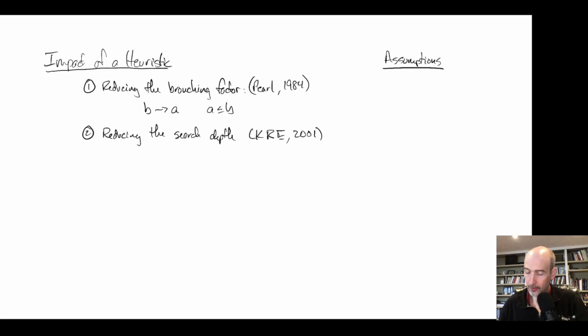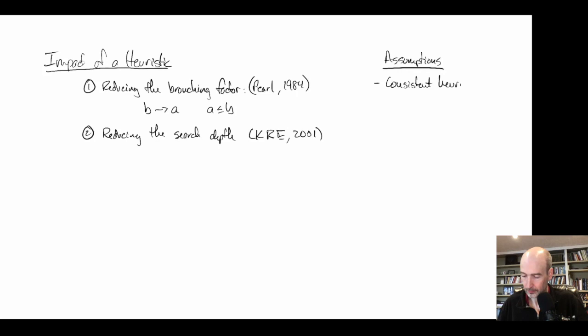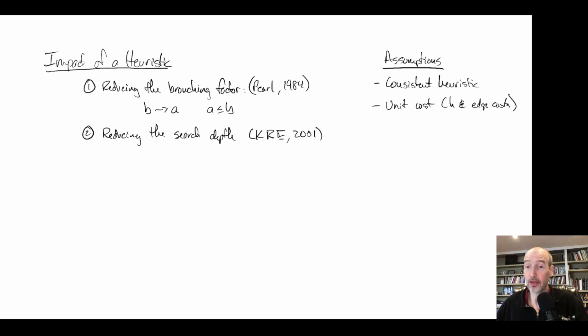This paper had a straightforward analysis of what could happen when we add a heuristic to the problem, or if we look at changing the strength of a heuristic. There are later papers that made more complicated assumptions, but we're going to look at the simpler version today. Some of the assumptions we're going to make: we're going to think about having a consistent heuristic, and unit costs both in our heuristic and in the cost function. Everything's going to be integer costs — we can relax these assumptions but they make the analysis more complicated.